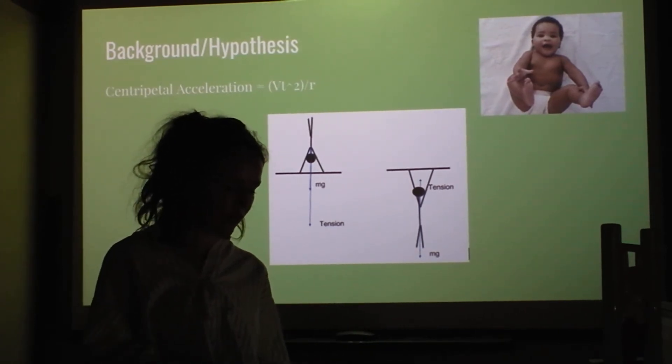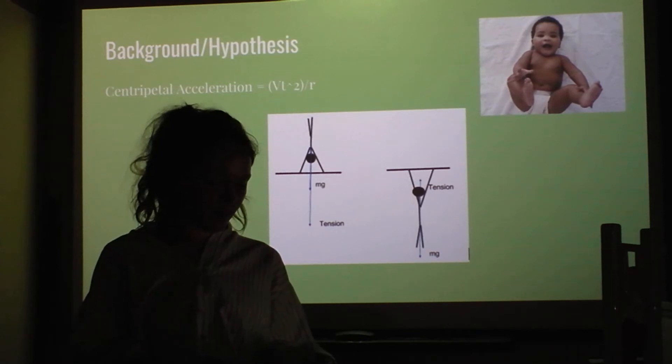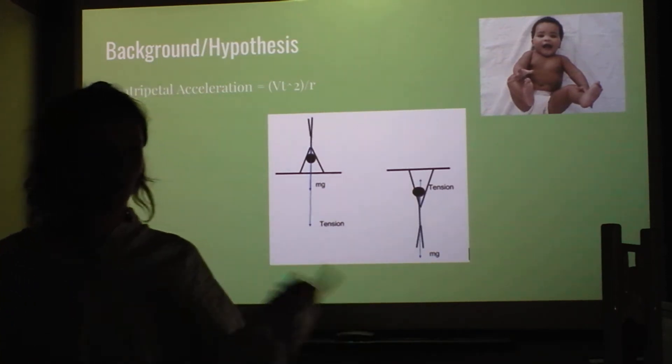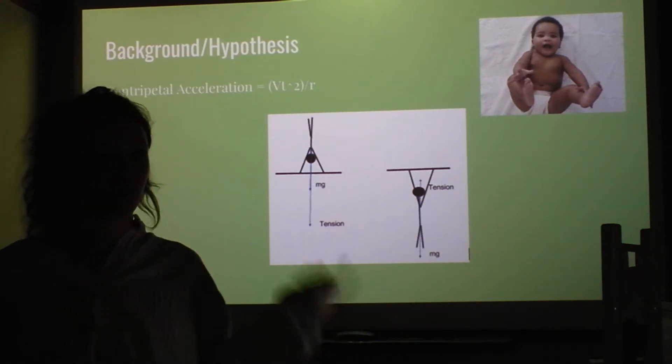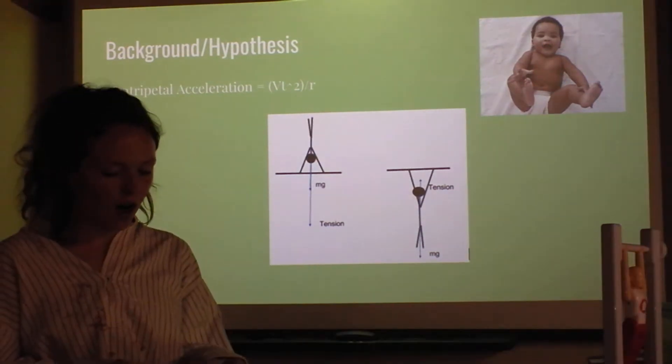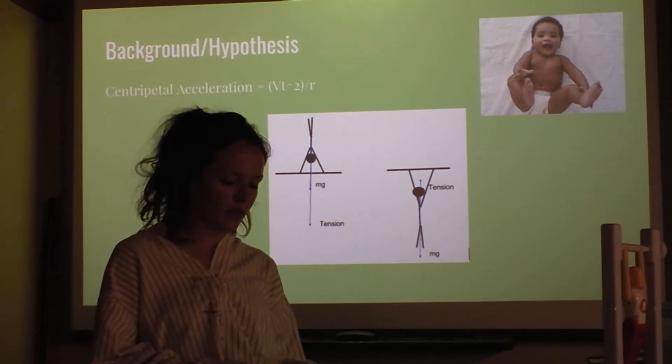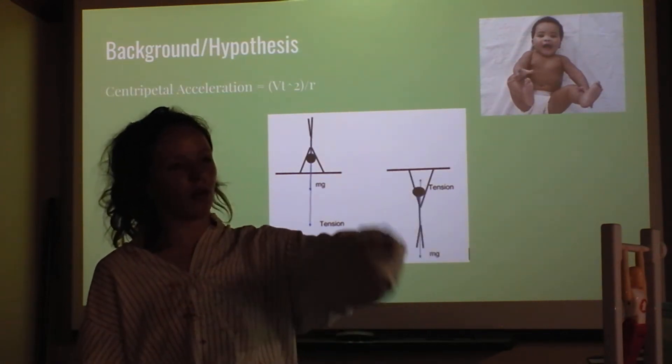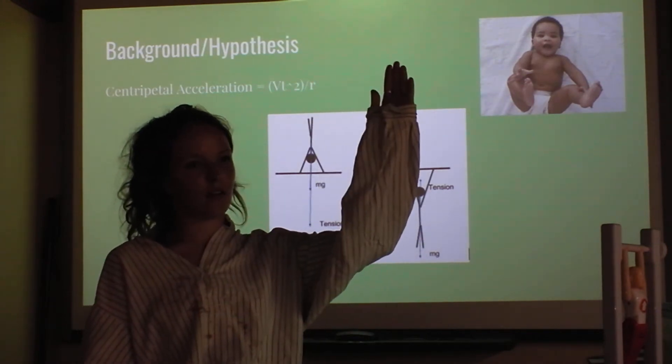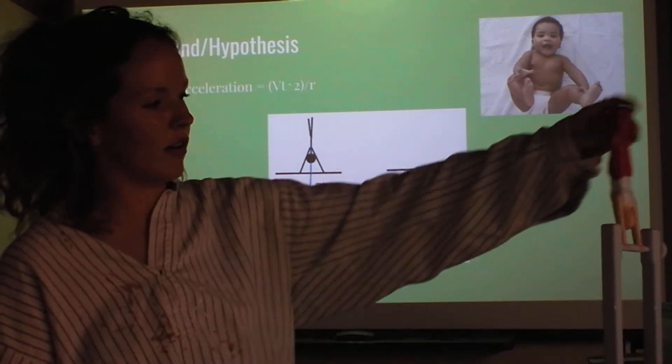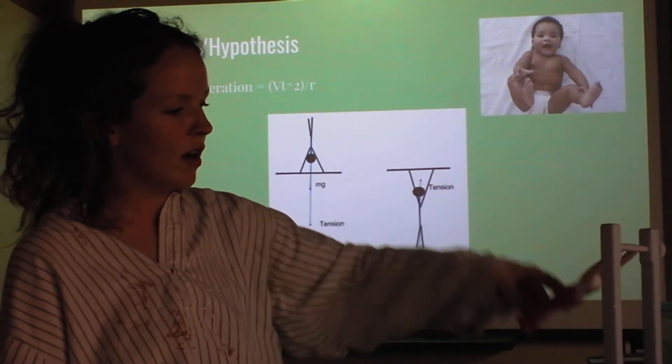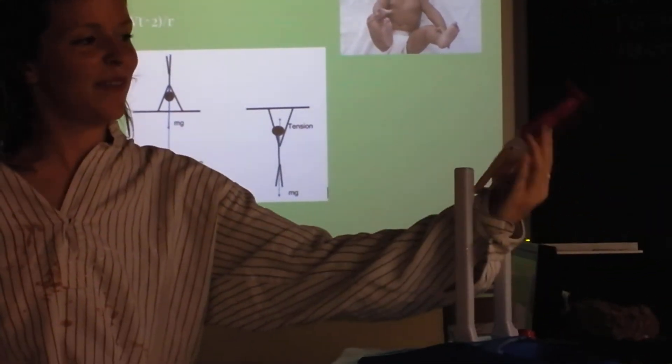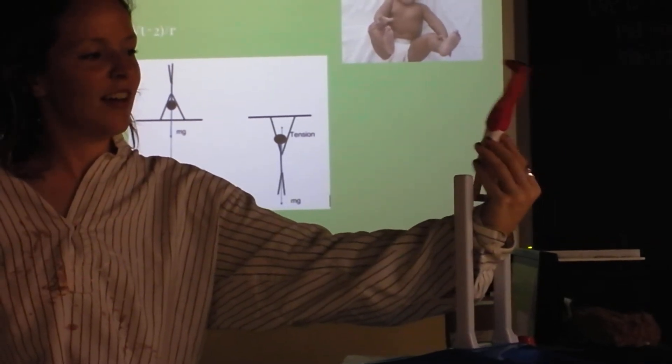My hypothesis was that as the male or female completes more and more consecutive giants, their velocity would increase after each one. And I also thought that the gymnast's velocity would be most great when they are directly below the bar or coming, kicking back up to the starting handstand. So they start like so, and so right there, when they kip up would be where they would have the most velocity.